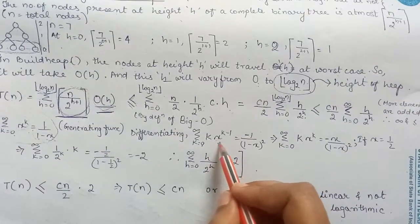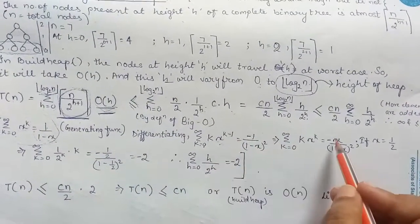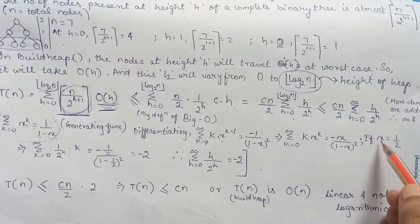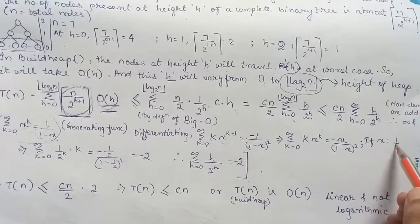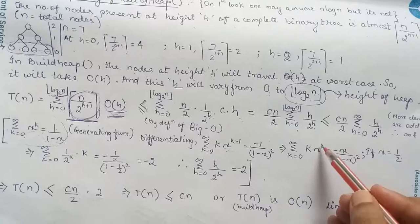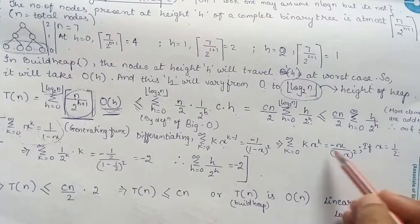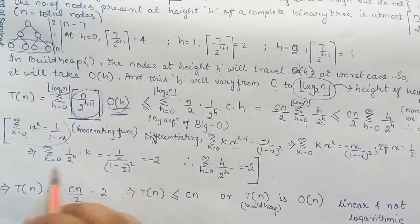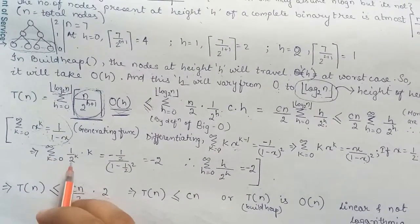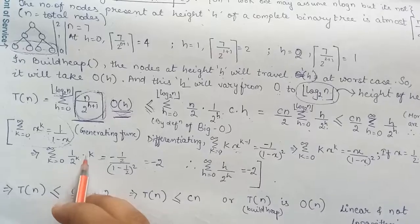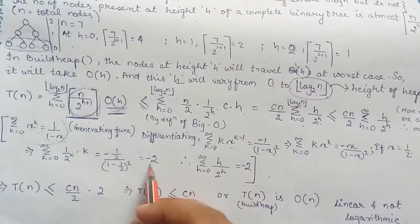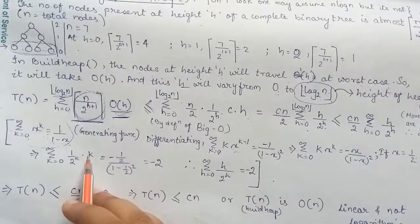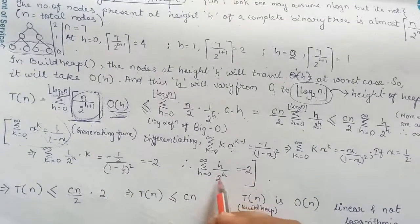So 1 x is here down here this minus 1 this x comes here by cross multiplication. So now if x is equal to half we will substitute the value of x as half here and in all the terms we will get it as minus 2. So summation k equal to 0 to infinity 1 by 2 to the power k k into k is minus 2.